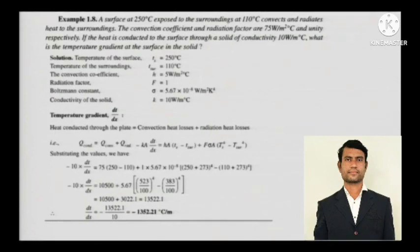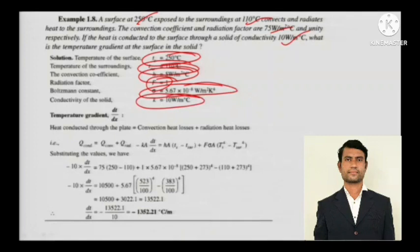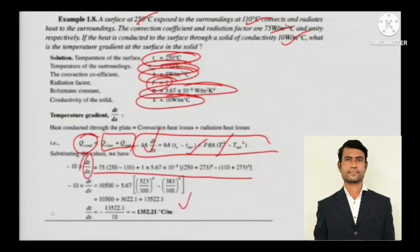Next numerical: a surface at 250 degree Celsius is exposed to surroundings at 110 degree Celsius and exchanges heat by both convection and radiation. The convection coefficient, radiation factor, and thermal conductivity (10 W/m°C) of the solid are given. Calculate the temperature gradient (dT/dx) at the surface. Using Q_conduction = Q_convection + Q_radiation — Fourier's law, Newton's law, and Stefan-Boltzmann law — substitute all values and solve for dT/dx.